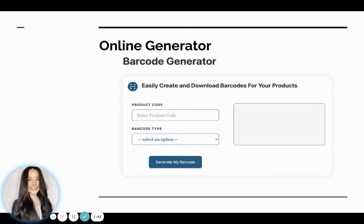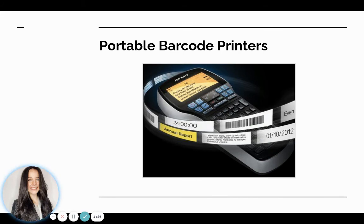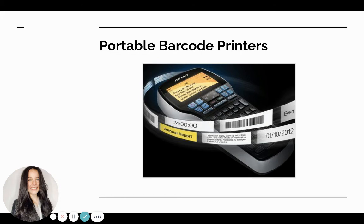Your next option is if you're using a point of sale system like Square for Retail — once you've put in your product codes, there will already be a generated corresponding barcode for that product that you can print directly from your point of sale system. You can also get a portable barcode printer, which is very simple to use. It's great for smaller or mobile operations — you just put in your product code and it prints the label right there.